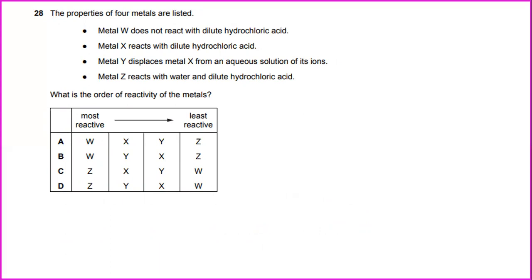Metal Y does not react with dilute hydrochloric acid, which is less reactive. If metal X reacts with dilute hydrochloric acid, the status is better than metal Y in terms of reactivity and metal Y displaces metal X from a solution of its ions and metal Z reacts with water and dilute hydrochloric acid. What is the order of reactivity of the metals? It should be Z in terms of the most reactive followed by Y, X, and W. The answer will be D.